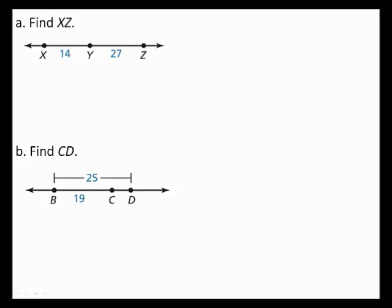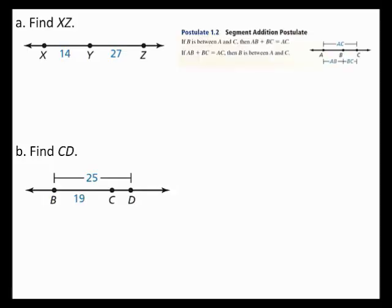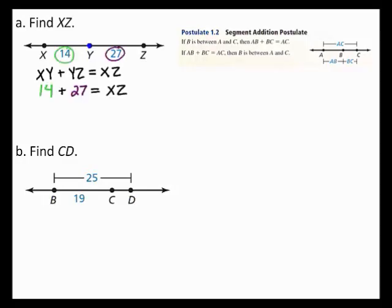Find the length of segment XZ and find the length of segment CD. To find these lengths, you can use the segment addition postulate. This postulate states that if B is between A and C, then the length of segment AB plus the length of segment BC equals the length of segment AC. In part A, point Y is between X and Z. So, by the segment addition postulate, the length of segment XY plus the length of segment YZ equals the length of segment XZ. From the diagram, the length of segment XY is 14 and the length of segment YZ is 27. 14 plus 27 gives you 41. Therefore, the length of segment XZ is 41.